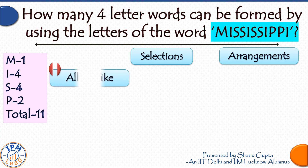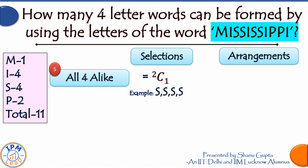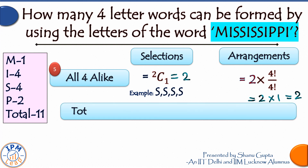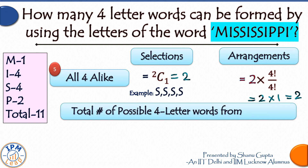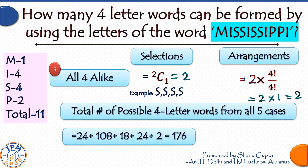Case 5: all four letters alike. Only I and S have four units each, so we select one of these two in 2C1 = 2 ways. The sample, say SSSS, can be arranged in only one way since all four are alike (4!/4! = 1). Therefore two arrangements are possible for this case. The total number of possible four-letter words from all five cases is 24 + 108 + 18 + 24 + 2 = 176.